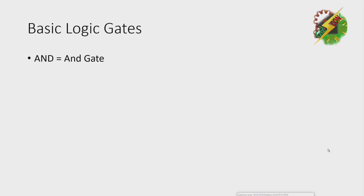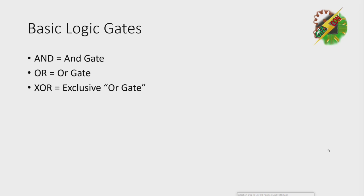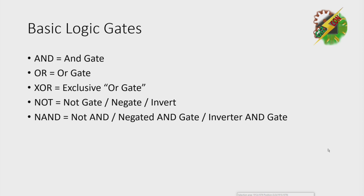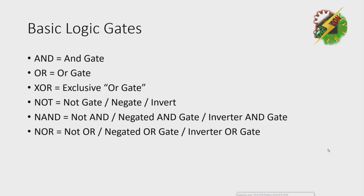We have basic logic gates: AND or AND gate, OR or OR gate, XOR or exclusive OR, NOT or NOT gate (also called negated or inverter), NAND or negated AND gate, and NOR or the negated OR gate.